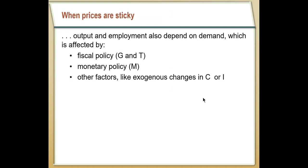When prices are sticky — as we're going to assume for the rest of the semester — we see that output and employment can depend on demand as well. Because output can depend on demand, fiscal policy can start to play a really important role in the determination of GDP, so government spending and taxation can be really important. Additionally, monetary policy can really matter in the short run — it doesn't just pass through as an immediate change in prices. Exogenous changes in consumption or investment can also play a significant role in these short-run economic fluctuations.